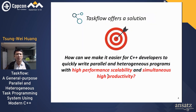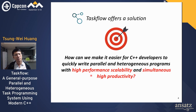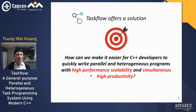The Taskflow project is trying to offer a solution to this. We address the question: how can we make it easier for C++ developers to quickly write parallel and heterogeneous programs with high performance and simultaneously high productivity? By high performance, we mean the program has to run fast and scale to many-core processing units, including CPU and GPU. By high productivity, we reduce the time it takes to implement the program.